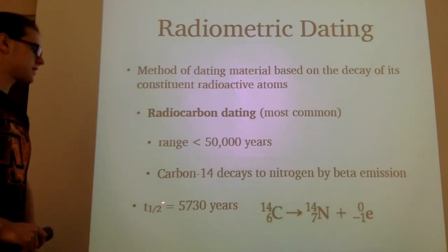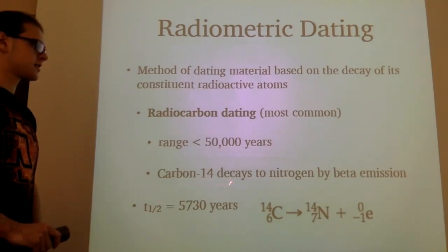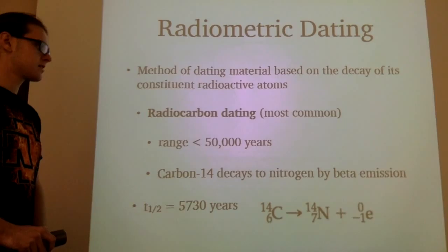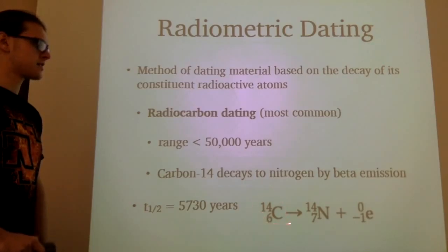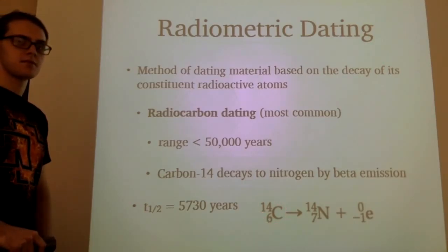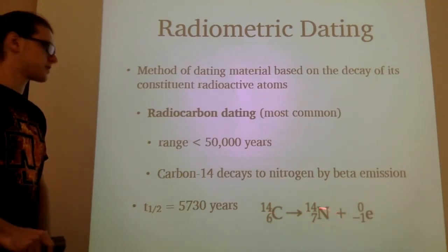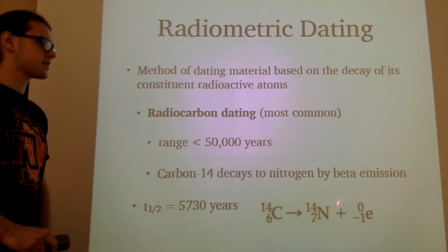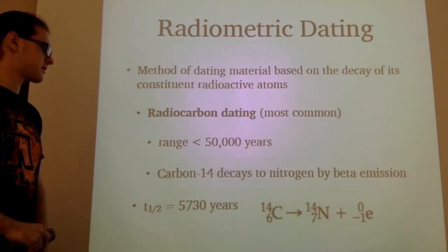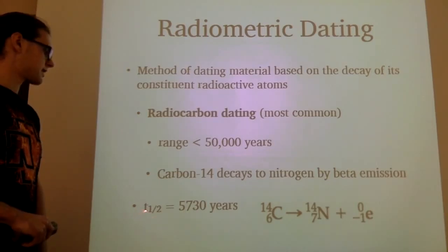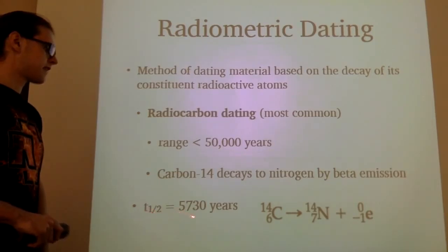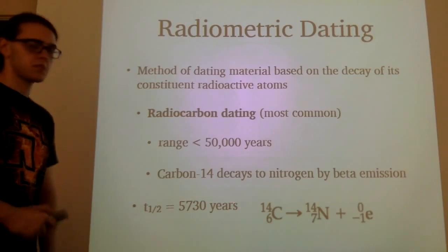The way this is carried out is carbon-14 is going to decay into nitrogen via beta emission. Here we have carbon-14, the very trace amount that we saw before, decays into nitrogen and emits a beta particle. And carbon-14 has a half-life of 5,730 years.